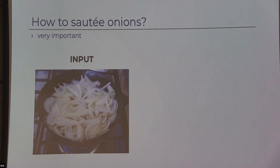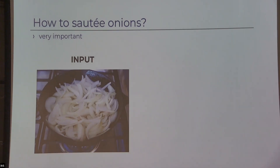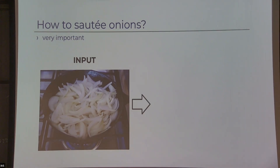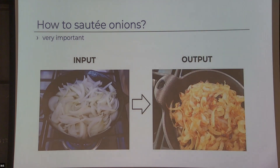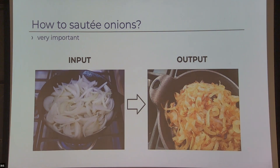We're given as input chopped pieces of onion laid on a pan with the flame burning underneath. We want to apply a sequence of local algorithmic operations on the pieces of onion to obtain the desired, yummy output. When we obtain an output, we can check and see that the onion looks good, well prepared.